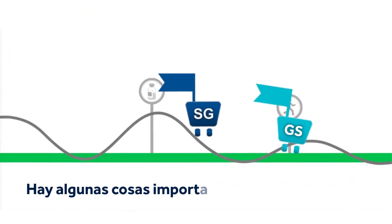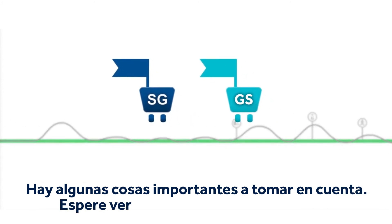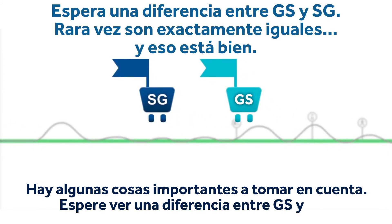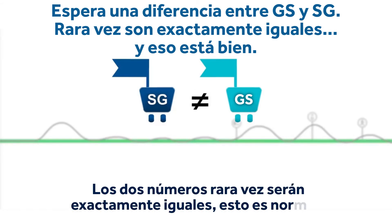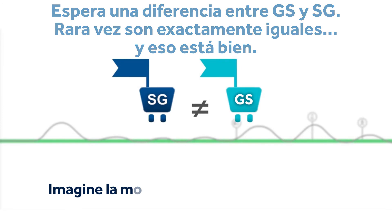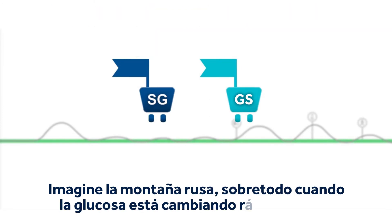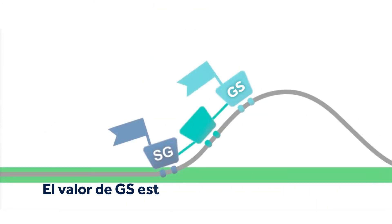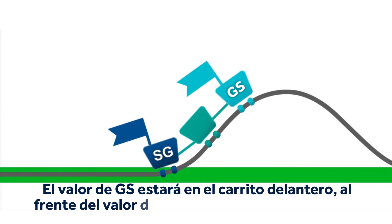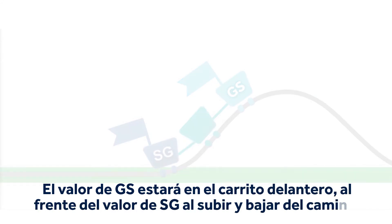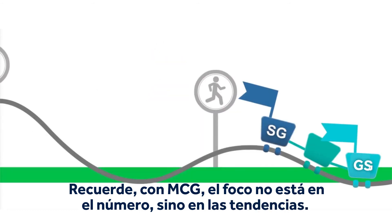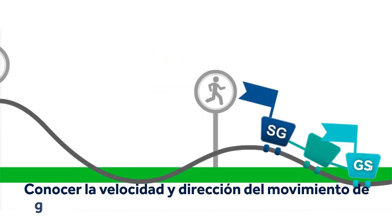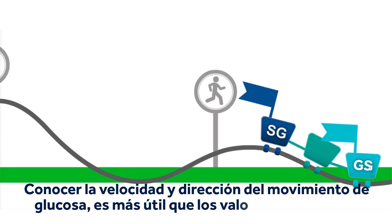There are a few important things to keep in mind. Expect to see a difference in BG and SG — the two numbers will rarely be exactly the same, and this is OK. Think about the roller coaster, especially when glucose is changing rapidly. The BG value will be in the front car, ahead of the SG value when going up and down the track. With CGM, the focus is not on the number, but on the trends. Knowing the speed and direction of glucose movement is more useful than individual values.